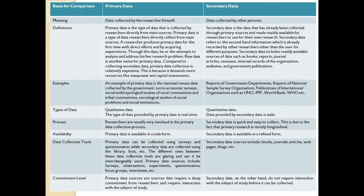Secondary data includes readily available sources such as books, reports, journals, articles, census records, international organization records, websites, and government publications. Examples of primary data include national census data, socio-economic surveys, socio-anthropological studies of rural and tribal communities, and sociological studies of social problems and institutions. Examples of secondary data include reports of government departments, NSSO reports, and publications of international organizations such as UNO, IMF, World Bank, and WHO.